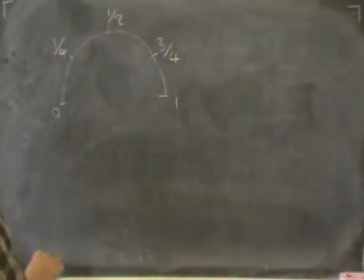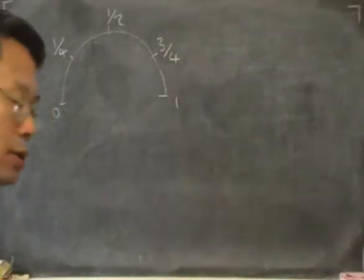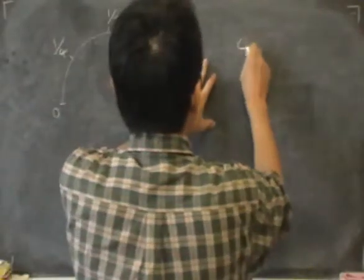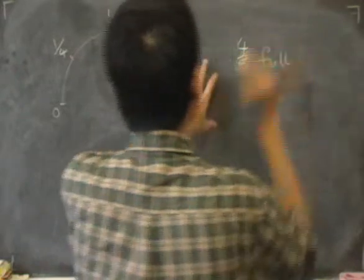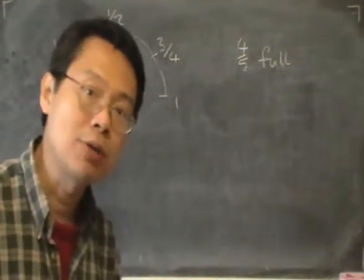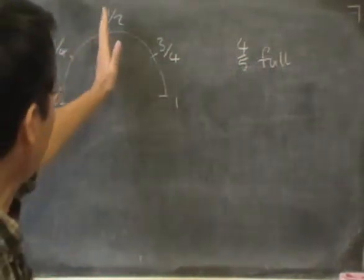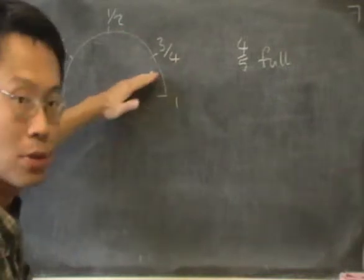In the next part of this question, we are given that the petrol tank is four-fifths full. The question is, where is the arrow pointing? Does it point there, or there, or somewhere in between there, or there?